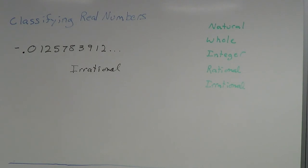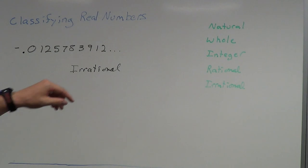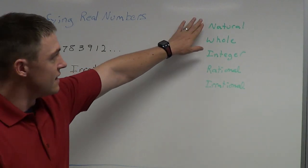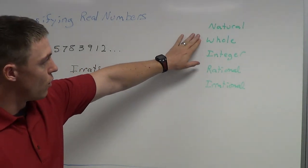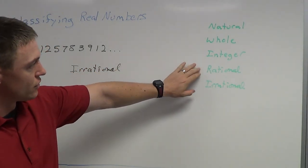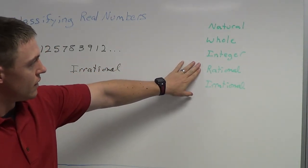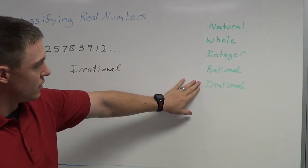These are just a couple of examples of how to classify real numbers. Our five classifications are: natural, whole, integer, rational, and irrational.